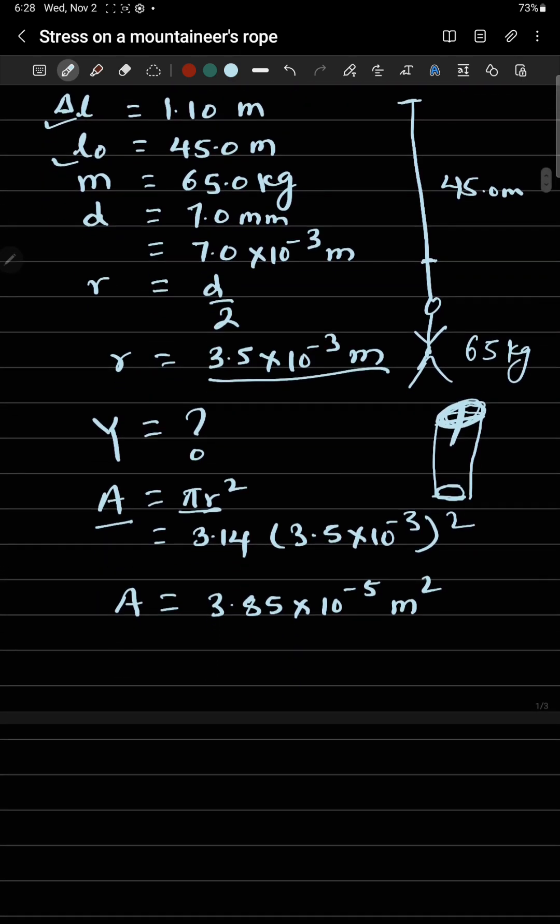Once I have area, original length of this string, and change in length which is elongation, I need one more thing to calculate Young's modulus, which is the force acting on the rope. Force can be obtained from F equals mg.